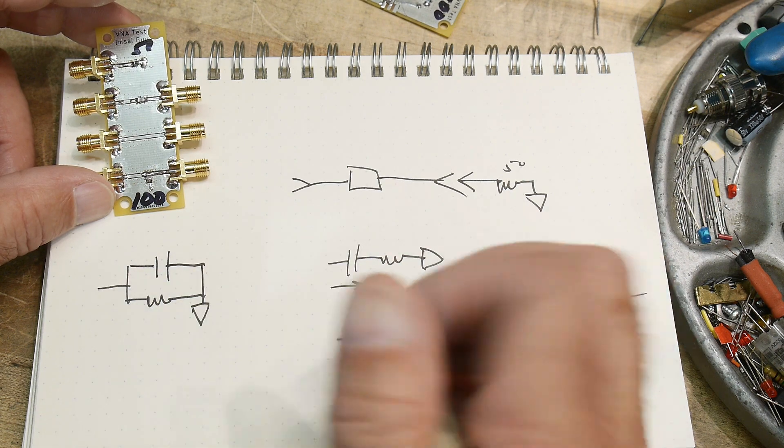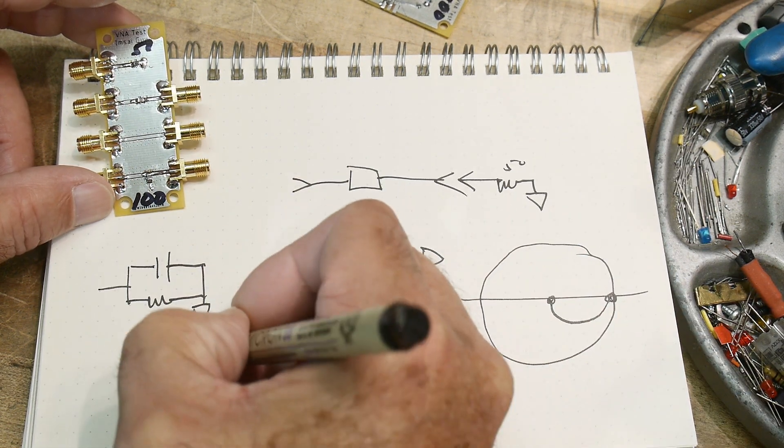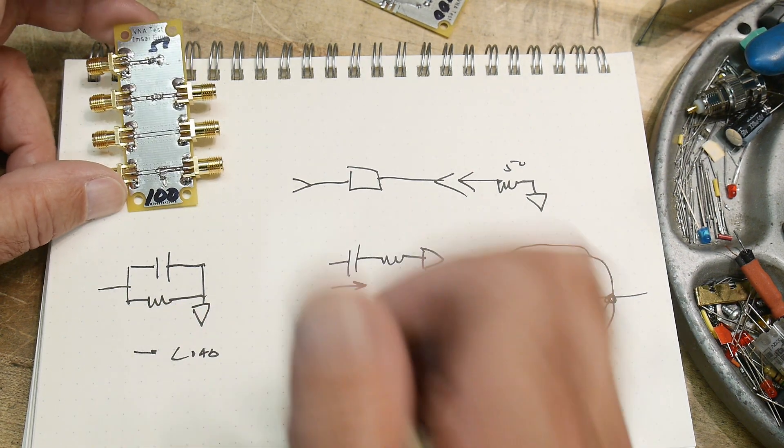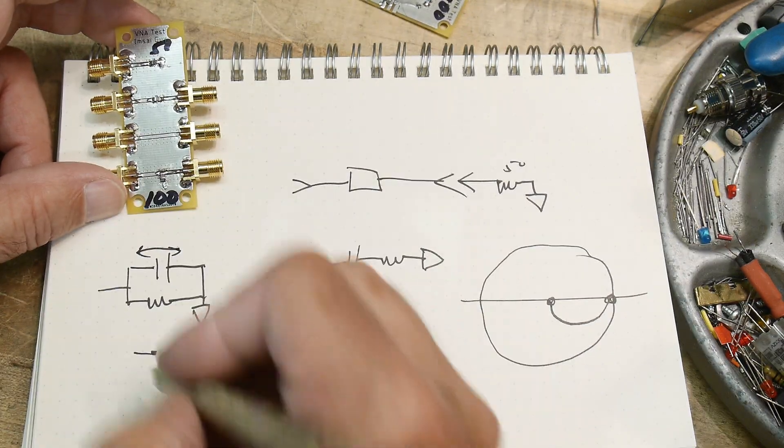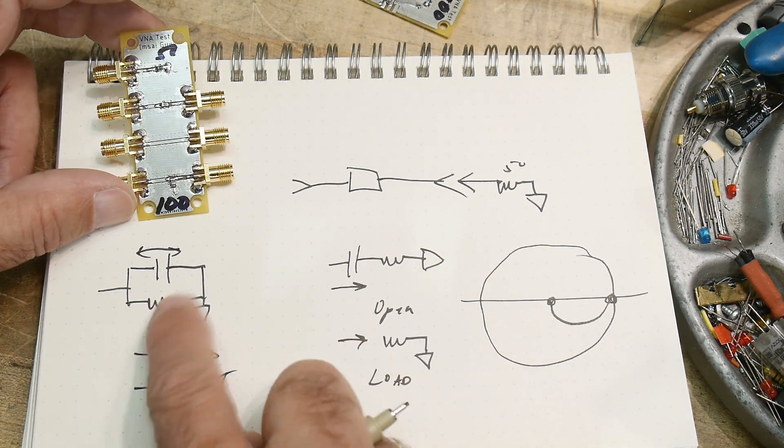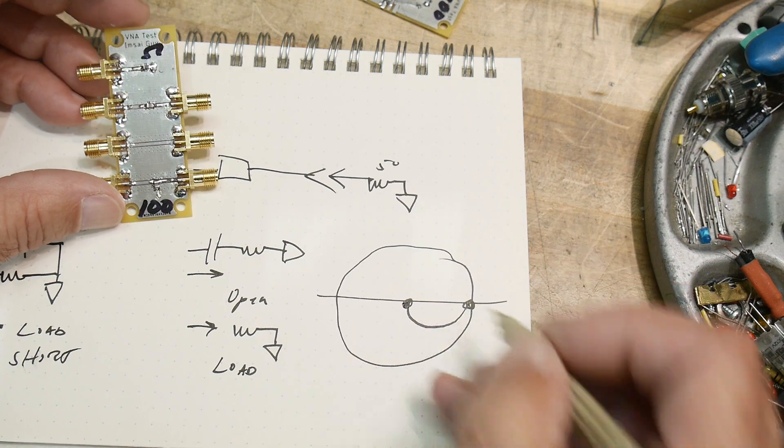At DC there's no conduction through the capacitor - the capacitor won't let through DC - so we start out with a load. Then as the frequency gets higher and higher, the capacitor looks like a short and we go to a short.